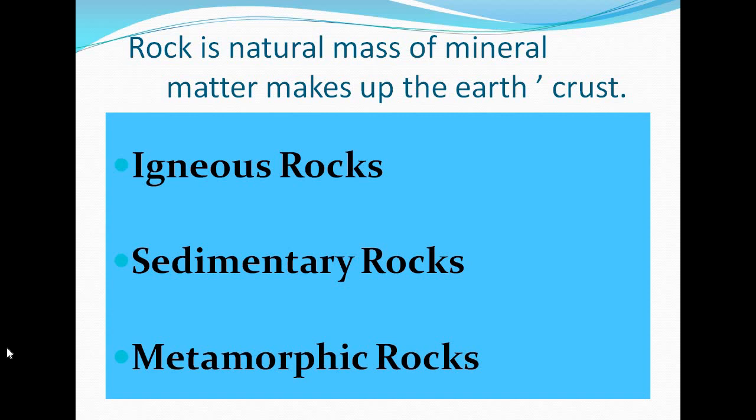So to understand the difference: rocks formed on the outer part, meaning on the earth's surface, are extrusive, and those formed inside the earth's crust are intrusive igneous rocks. Second is sedimentary rocks.